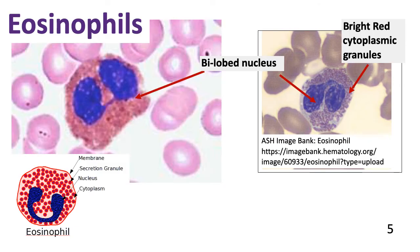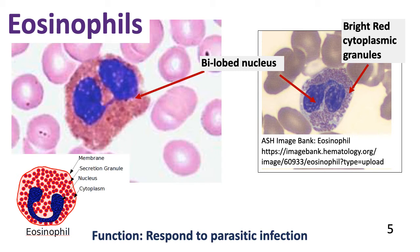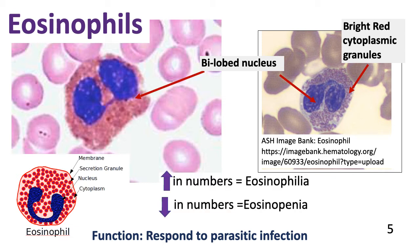Eosinophils are the second category of leukocytes that we're looking at. The nucleus is segmented and bilobbed. What is outstanding about the eosinophils are the bright red eosinophilic granules in the cytoplasm — they are large and red, you can't miss them. Their function is to respond to parasitic infections, worms, or severe allergic reactions, which cause an increase in eosinophils in the blood, leading to eosinophilia.